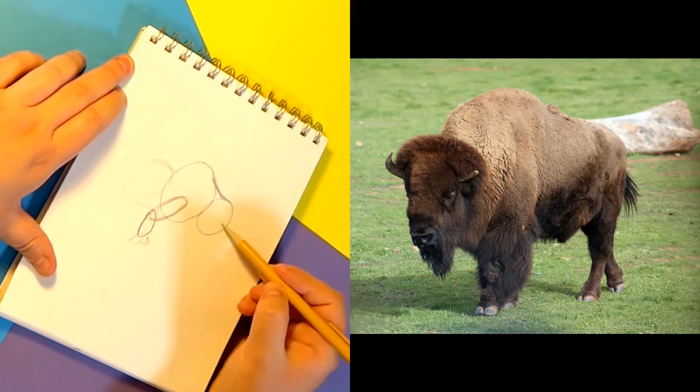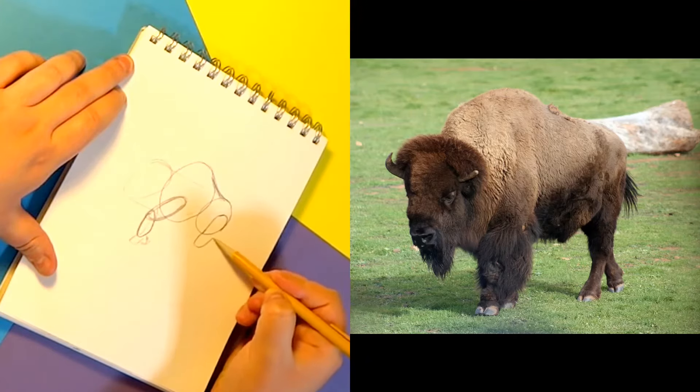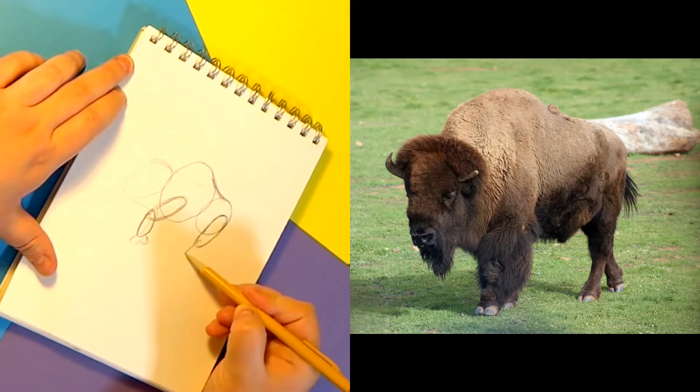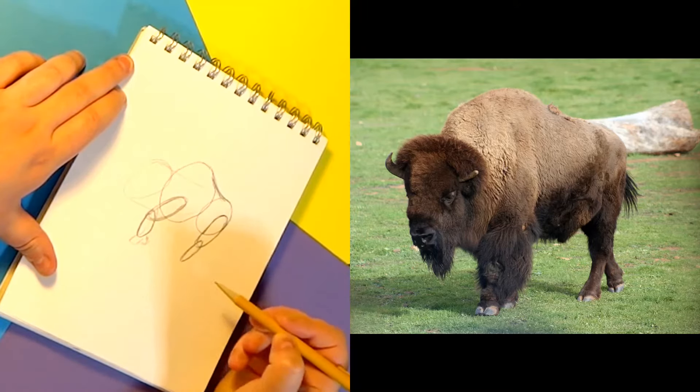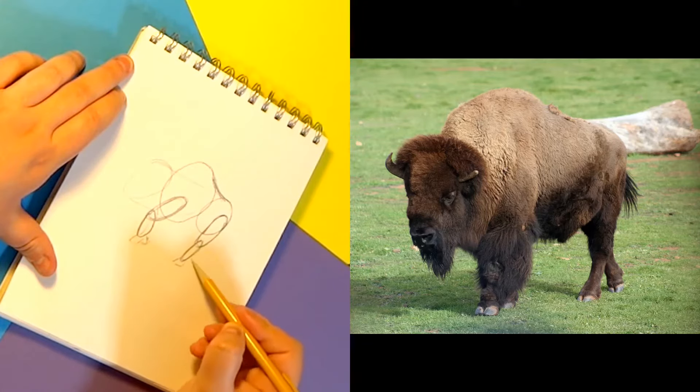Now this back part comes all the way to the back, about a little over halfway up this circle. And then you're just going to bring that oval down, and another oval, and a hoof, and a hoof.